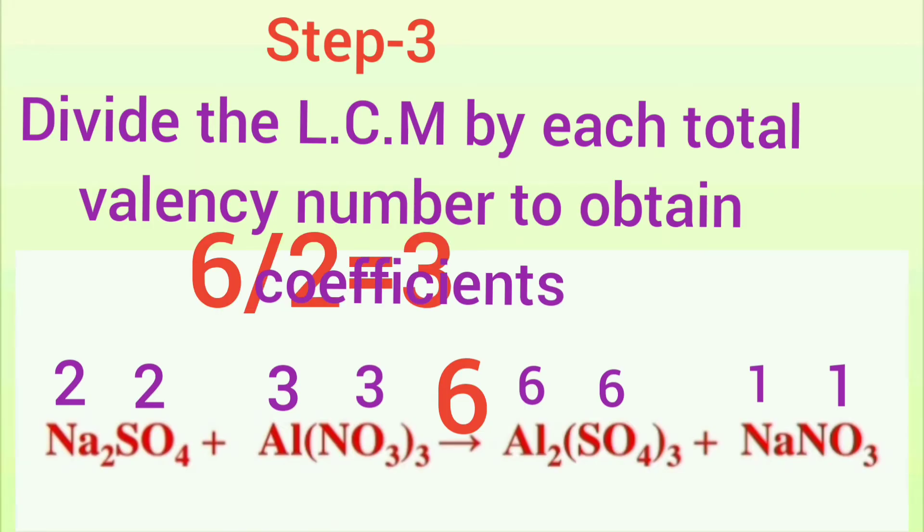The LCM of all the total valencies of each reactant and product is six. So, six divided by two equals three. Six divided by three equals two. Six divided by six equals one. And six divided by one equals six. So, the coefficients are three, two, one, and six, respectively.